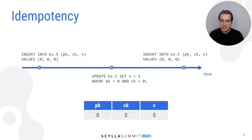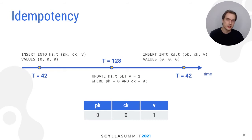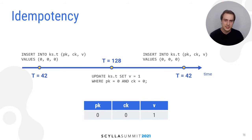First, determine if your request is idempotent. Does applying it twice have the same effect as applying it once? In this example, we first insert a row, then update the v column, then insert the same row again. Here, the insert is not idempotent. If we perform a read, we'll see v equal to zero, not v equal to one. The value comes from the second insert, not from the update. But recall that Scylla uses timestamps to decide the order of writes, and the write with the greatest timestamp decides what the end result is. The timestamp can be assigned on the client side, and that's what modern drivers do by default. In this example, the insert is repeated with the same timestamp, and that's idempotent. So even though we sent the insert twice, the v equal zero from the second insert loses to the v equal one from the update because it has a greater timestamp. So the second insert has no effect.